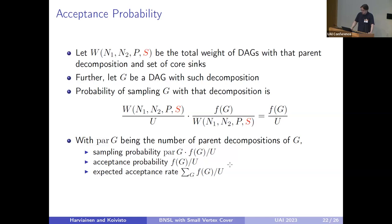Let's take a closer look on the probabilities. If we let this W(N1, N2, P, S) denote the total weight of that specific parent decomposition with that specific set of things in the core. Further let G be a DAG from such a decomposition. Then the probability of first sampling the parent decomposition is this W(N1, N2, P, S) over U, which was the upper boundary computed before, over all parent decompositions. The probability of sampling this DAG from within that parent decomposition is its score over the total weight of the parent decomposition. This weight of the parent decomposition gets canceled out here. If we let part(G) be the number of parent decompositions of G, we get that at the first step before rejection or acceptance, the probability of sampling G is part(G) times its score over this normalizing constant.